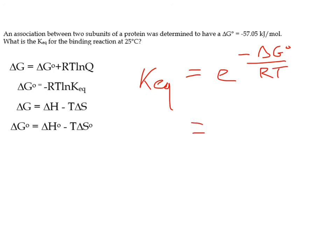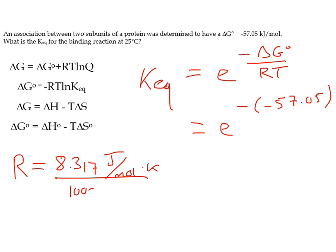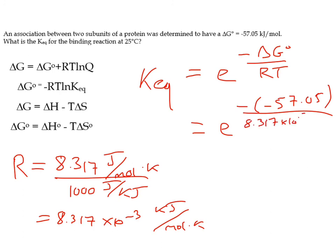So what we had was Keq is equal to E to the negative delta G naught over R T. I'm going to start plugging some values in. To the negative, negative 57.05. Now, notice that this is in kilojoules per mole. So that means we're going to have to use the correct R for this. R, if you might remember, is 8.317 joules per mole Kelvin. So that is one we'd want to use for something like this. Now, joules and kilojoules aren't the same. And so if we want to convert this, what we're going to need to do is divide by 1,000 joules per kilojoule. And we end up with 8.317 times 10 to the negative third kilojoules per mole Kelvin. So that's what I'm going to put here at R. Because we have now the right thing. Kilojoules per mole, kilojoules per mole. We speak in the same unit language.